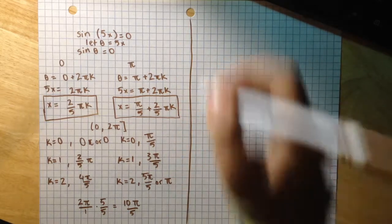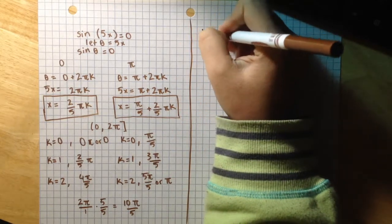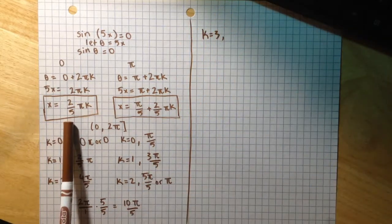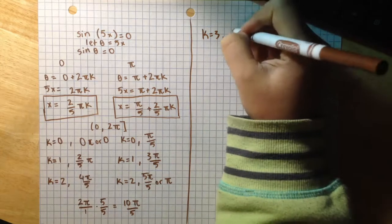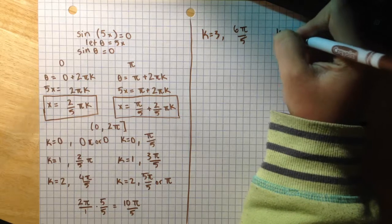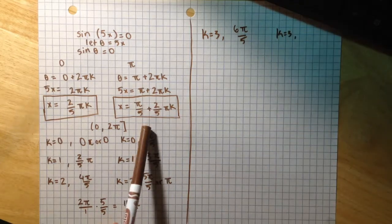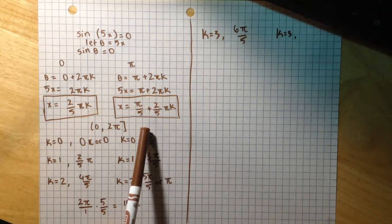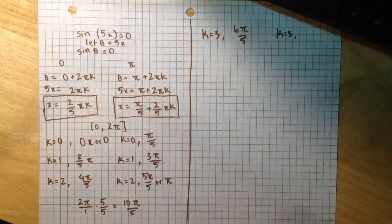So if I substitute k equals 3 into this equation, I get 6π/5. And k equals 3 into this equation, I get 7π/5.